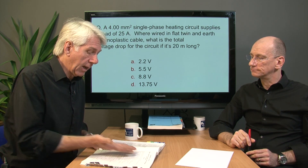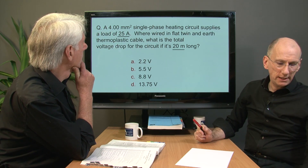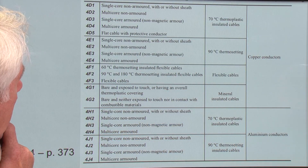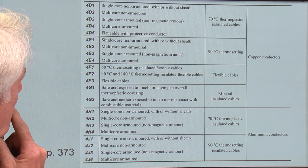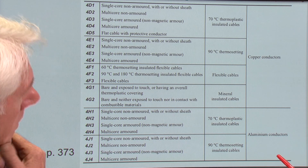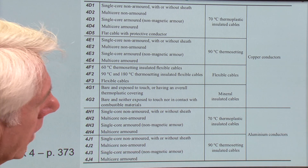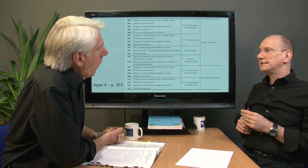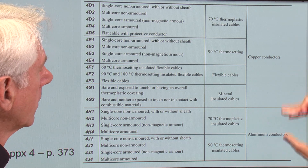Now we've got quite a few tables to consider, so let's take the two bits of information we have: 25 amps and 20 metres. We should also notice what type of cable we've got. The opening page for Appendix 4 is on page 373. It's broken down into aluminium conductors and copper conductors. The question didn't mention what type of conductor it was, but you can't have aluminium cables unless they're 16mm² or above, so we can immediately exclude that. We know we're looking at copper cables, which immediately reduces our choice.